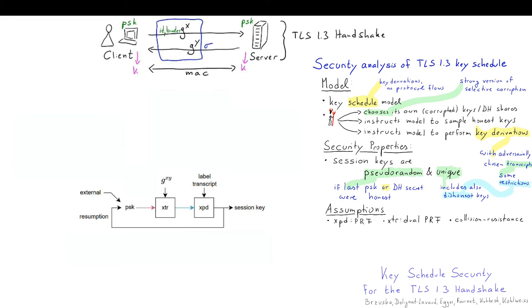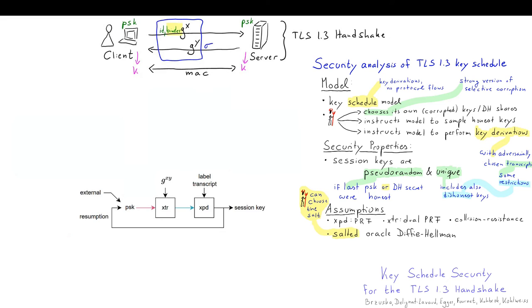Additionally, what our analysis brought to light was the need for the salted oracle Diffie-Hellman assumption, which is an assumption where the adversary can choose the salt. Because here in this protocol this pink function is a deterministic function of the pre-shared key, so if the pre-shared key is dishonest then the adversary has a lot of control over the salt that is used in this extraction step here.